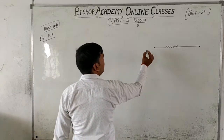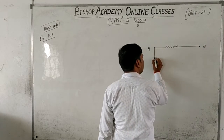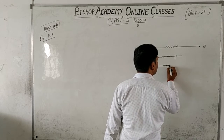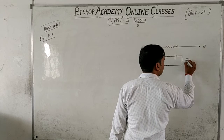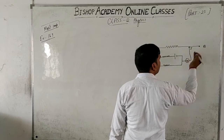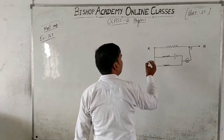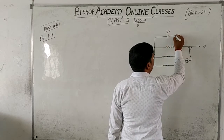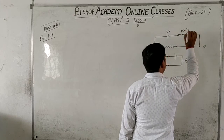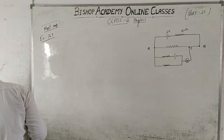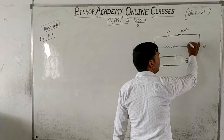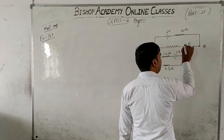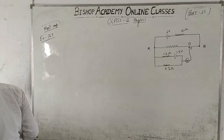There is a galvanometer and a jockey — the jockey is represented by the letter J. The driving cell has 2 volt EMF and 15 ohm resistance. This is our potentiometer wire. The driving cell has value 2 volt, and there is a resistance of 15 ohm. Where the null point is obtained, that point is named O. The values given are: 1.2 ohm (internal resistance), 0.3 ohm (external resistance), and 1.5 volt EMF for the cell being tested.